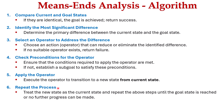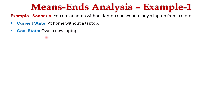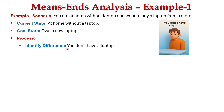So, hope you are clear on the means-ends analysis algorithm. Now let's look at an example. Consider the scenario where you are at home without a laptop and you want to buy a laptop from a store. The current state is: you are at home and don't have a laptop. The goal state is: you need to buy a new laptop. The first step is to identify the difference — you don't have a laptop and you need to buy a new one.